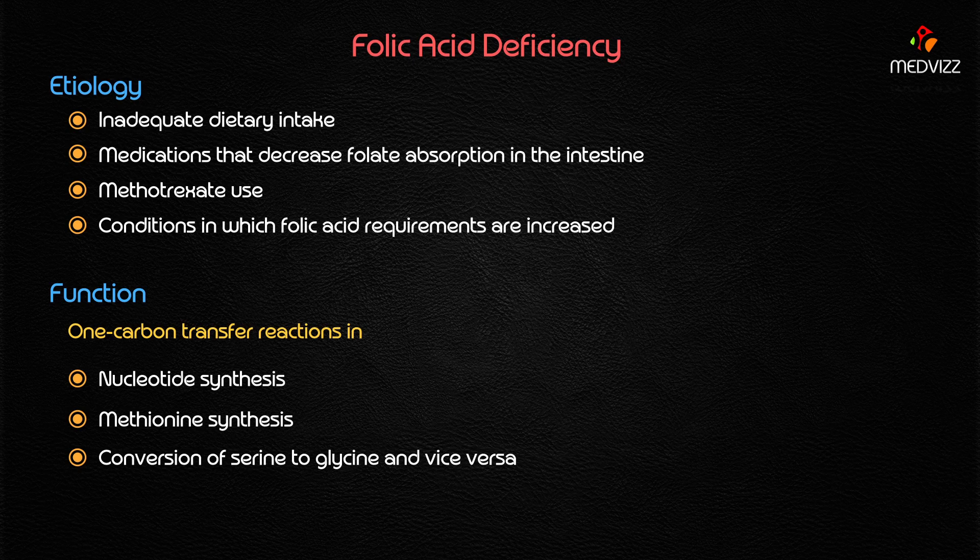phenytoin, cotrimoxazole (trimethoprim plus sulfamethoxazole), and methotrexate, which inhibits the conversion of folic acid to its active form. Folic acid deficiency also occurs in any condition where requirements are increased, such as pregnancy or chronic hemolytic anemia. These are the main causes of folic acid deficiency.